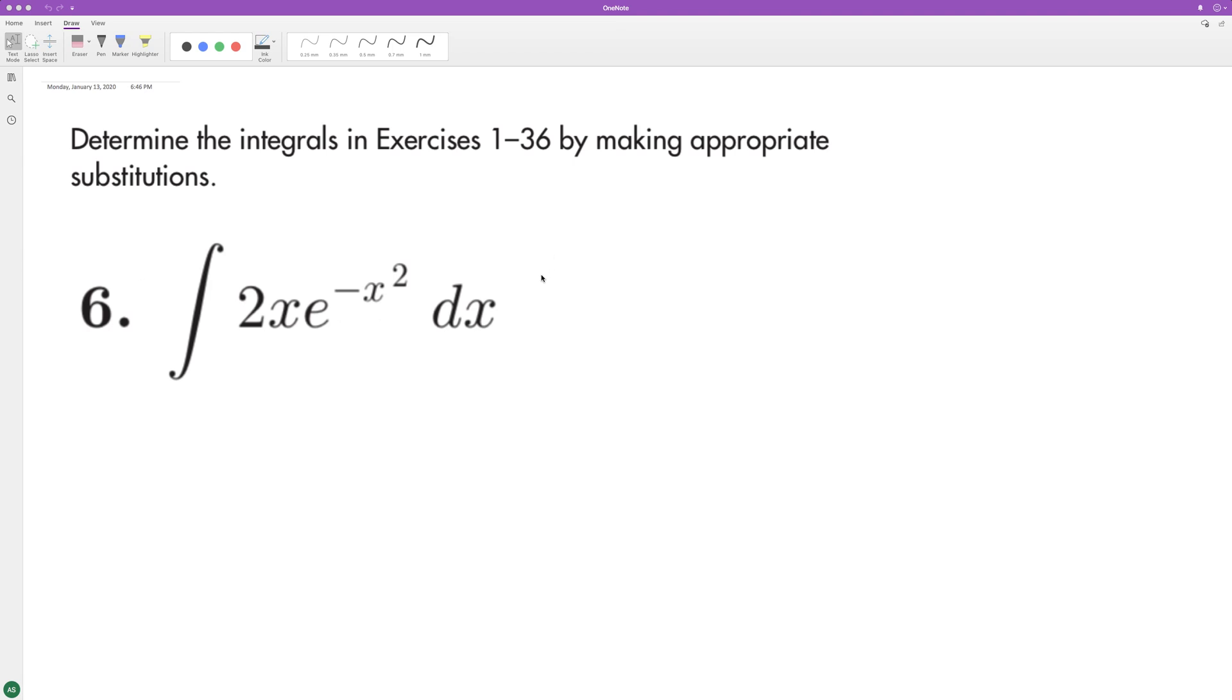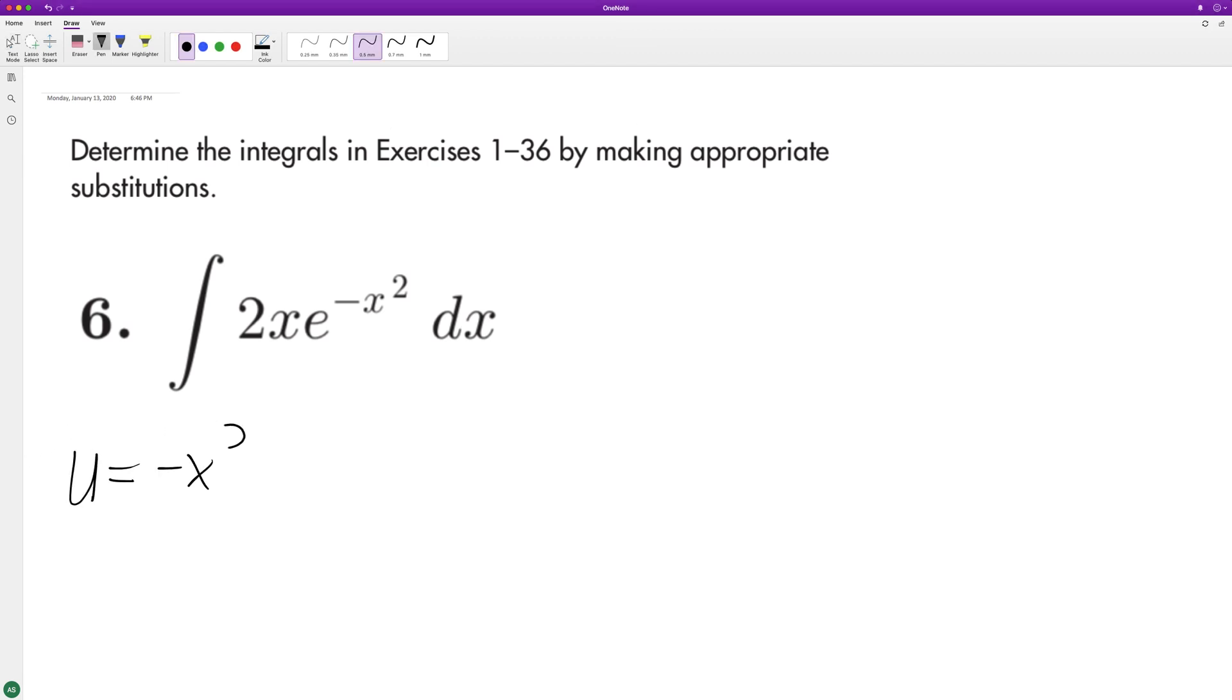So we'll use u-substitution. We'll set u equal to negative x squared, and du is equal to negative 2x. So if you see here, we have 2x. In order to get du equal to dx, we need to